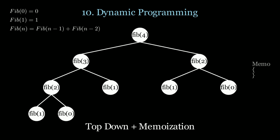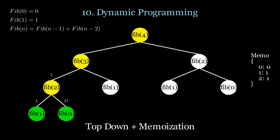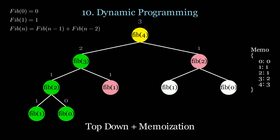With memoization — top-down with a hash map called memo — we store results for Fibonacci 0, 1, 2, 3, etc. We completely prune branches for Fibonacci 1 and 2, using cached values instead of re-exploring. This brings the time complexity to O(N) and space to O(N).